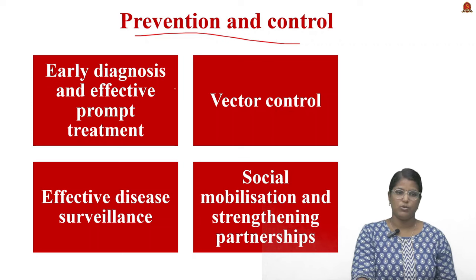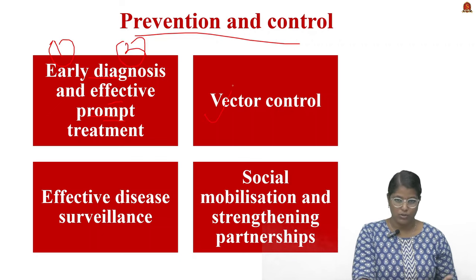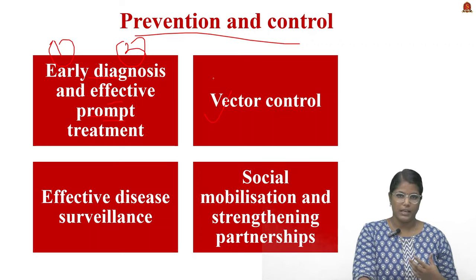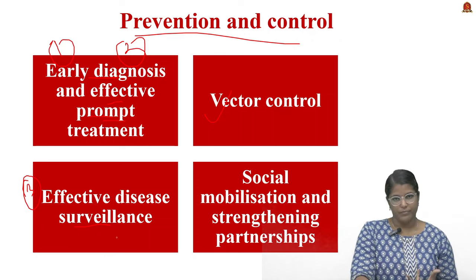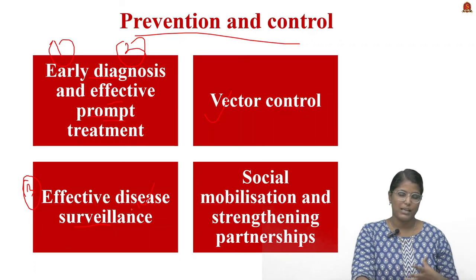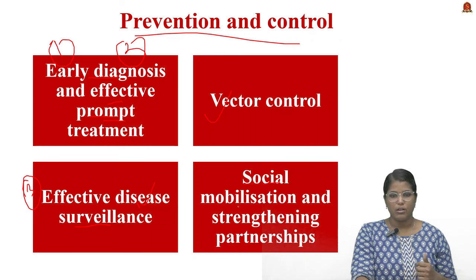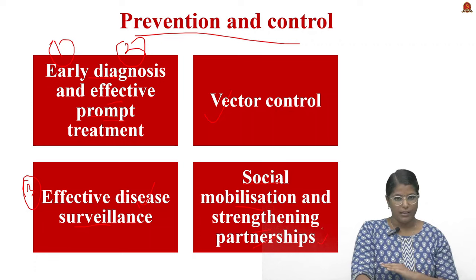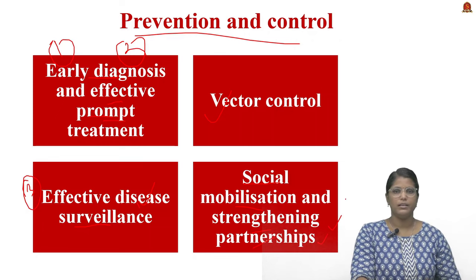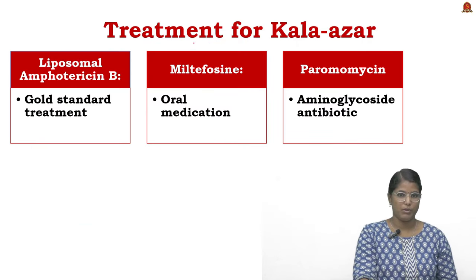For prevention and control: early diagnosis and prompt treatment is the first step. We must work on vector control — keeping safe from sandfly and mosquito bites. Surveillance is also essential to monitor when the disease may turn epidemic. Social mobilization and awareness campaigns are important, especially in rural areas where people sleep on the ground, which contributes to the spread of the disease.